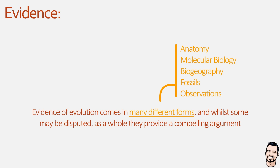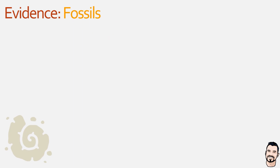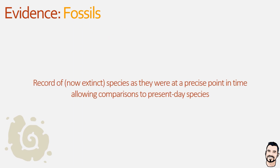First up we have fossils, which act as a sort of window to the past, providing a record of species that wandered the earth long before we did. These are extremely helpful because we can compare fossil records and, by extension, compare ancient species and hypothesize how they changed over time, when they might have become extinct, and how different species might have developed from them.